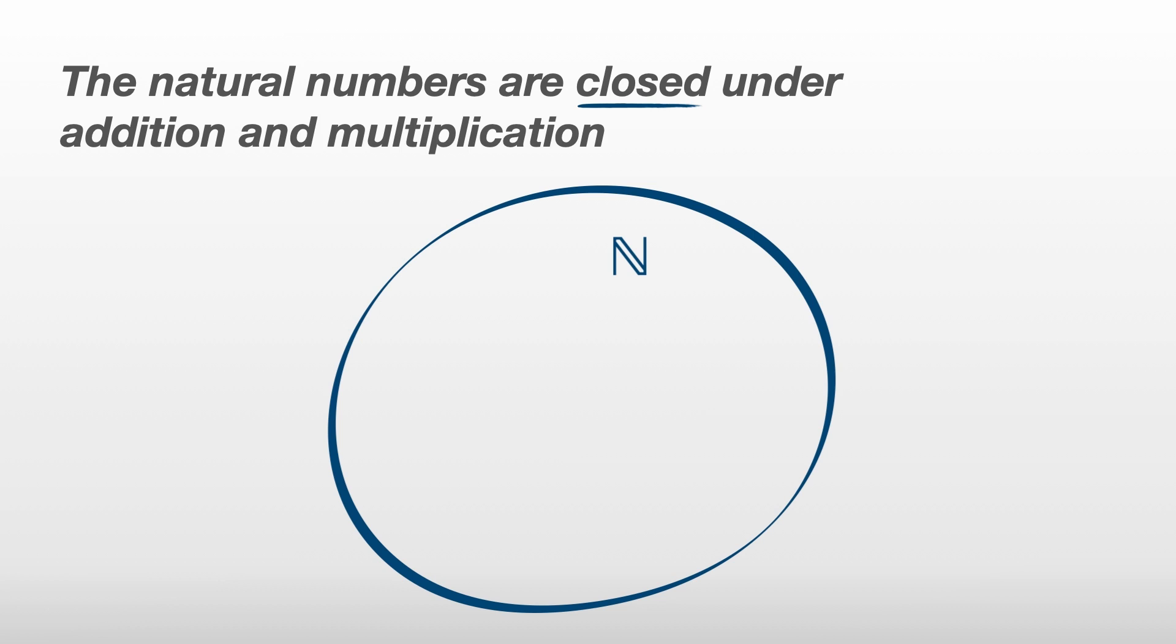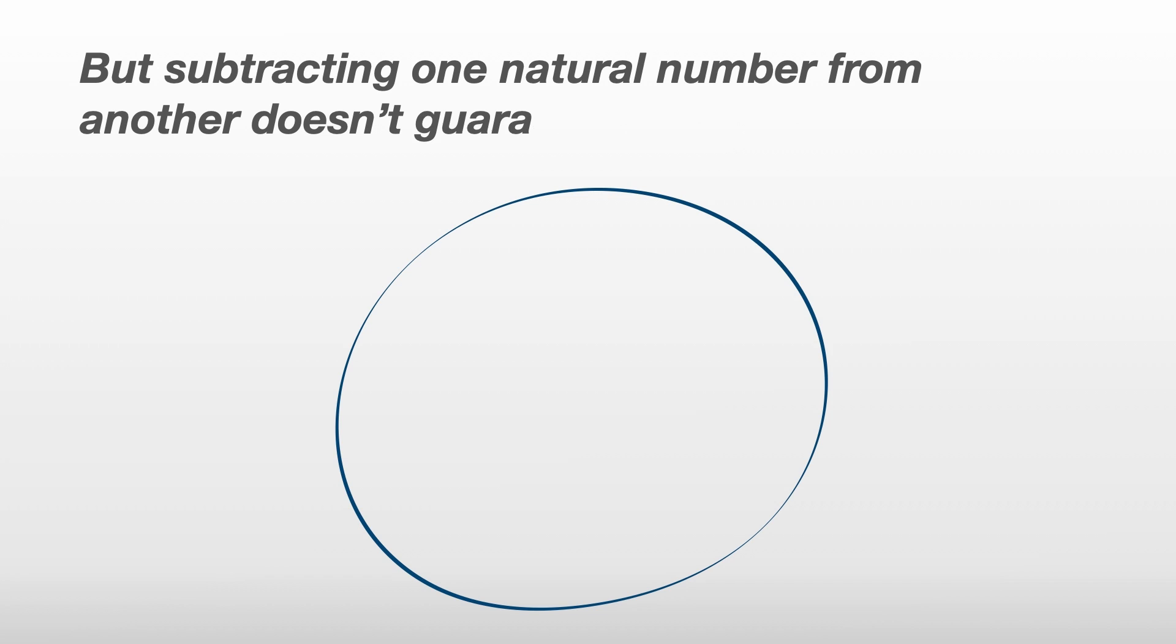An important concept we need to introduce is that the natural numbers are closed under addition and multiplication. This means that if you take two numbers in N and add them or multiply them together, you'll always end up with another number in N. But subtracting one natural number from another doesn't guarantee you'll get another natural number back.